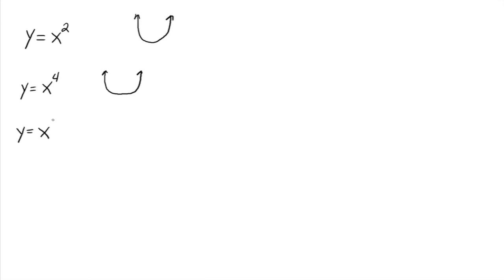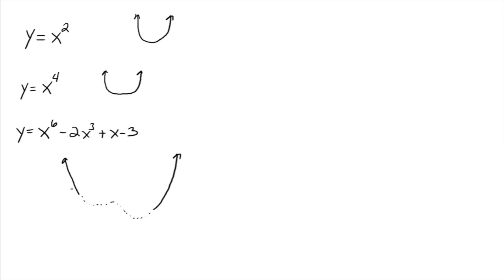Now graph y equals x to the sixth minus 2x cubed plus x minus 3. When you graph that, it comes down, might do something in the middle — I'll dash that part — and then it comes up. The stuff in the middle I don't really care about right now. I'm more concerned about what's happening out on the left and out on the right. The graph is going up when we move out to the left and going up as we move out to the right. That's called the end behavior.